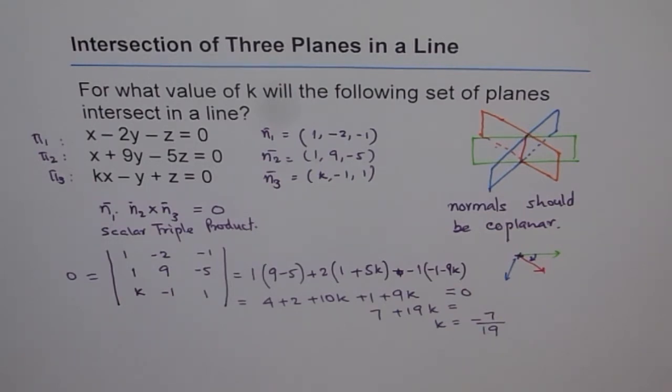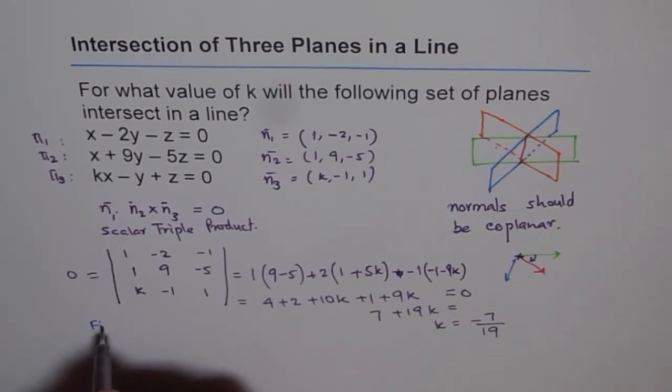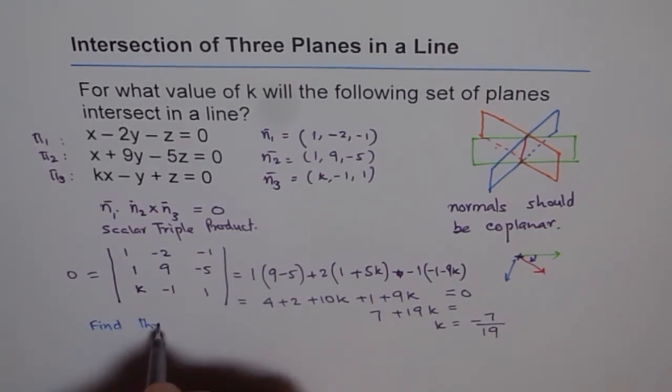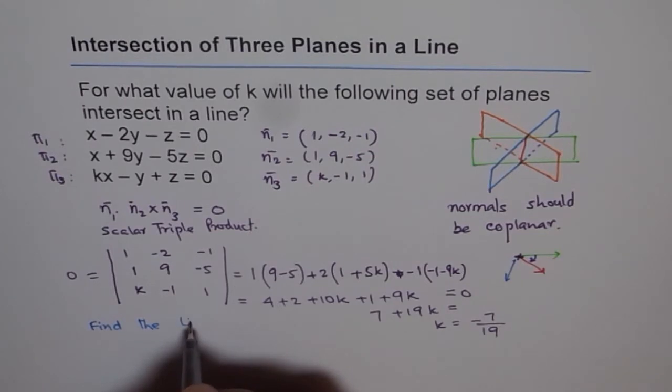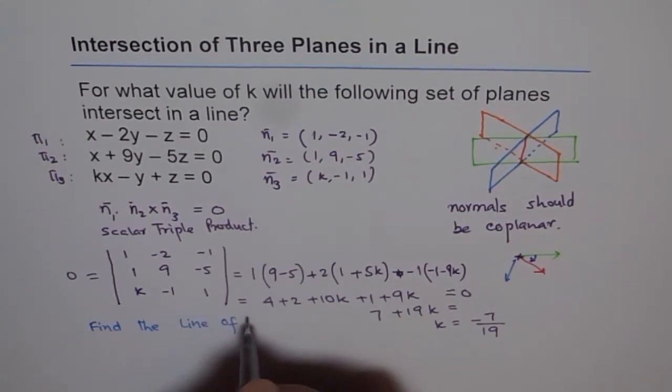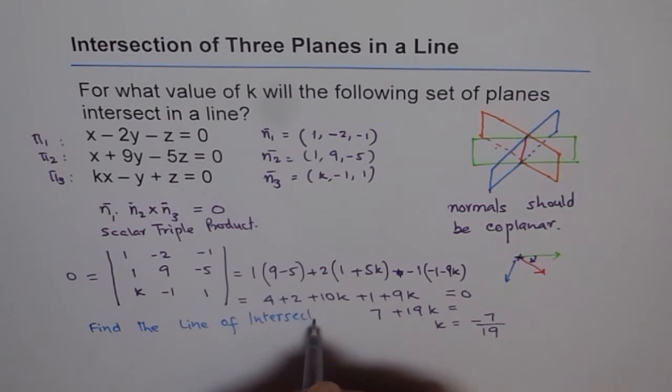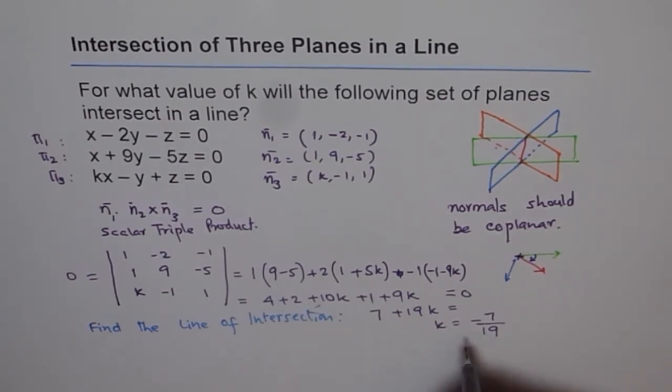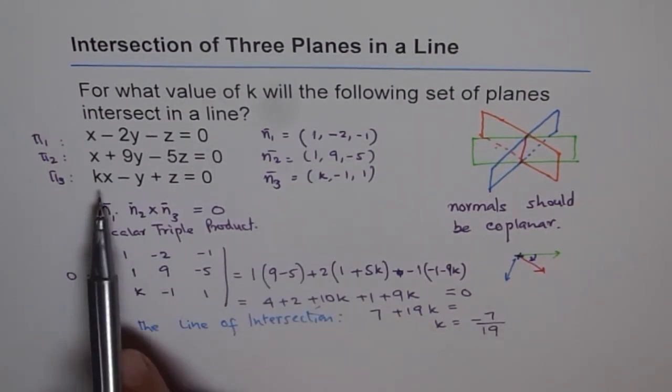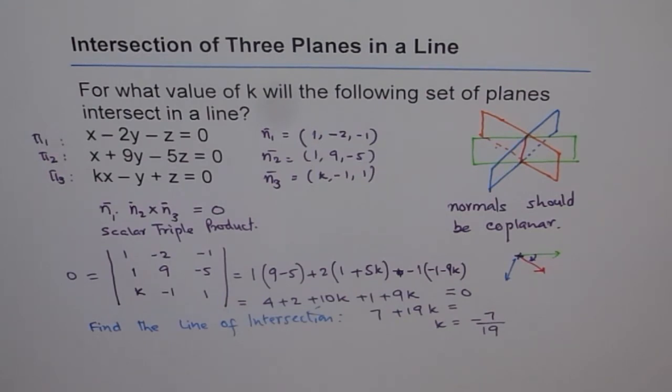Do you understand? So that is what we are going to do. And as an exercise, which I am going to leave for you, is for you to figure out the line of intersection. So you find the equation of line of intersection. You can use k as -7/19 here and then figure it out.